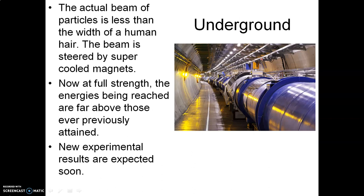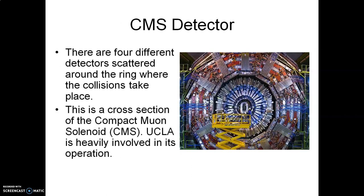Here is a photograph of the tunnel underground at CERN — this is the Large Hadron Collider. The particles themselves are steered around the circular track by magnets, which you can see here in blue. The actual beam of particles is less than the width of a human hair, and it ultimately reaches speeds greater than 99% the speed of light. Operating at its highest possible energies — basically at full strength — the energies being reached are far above any previously attained. New experimental results from the experiments currently being conducted at the LHC are expected soon.